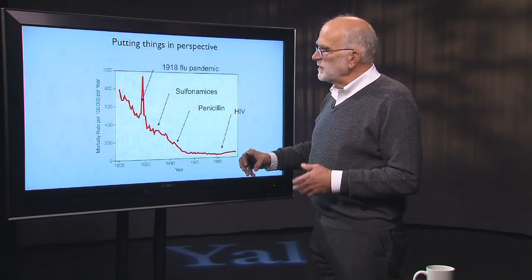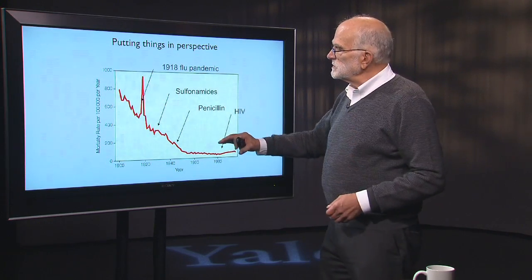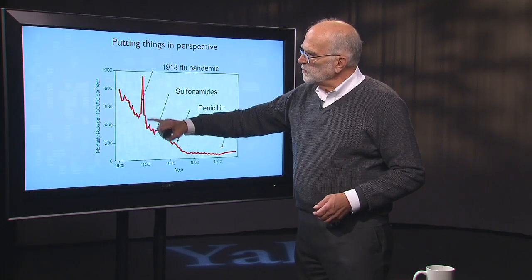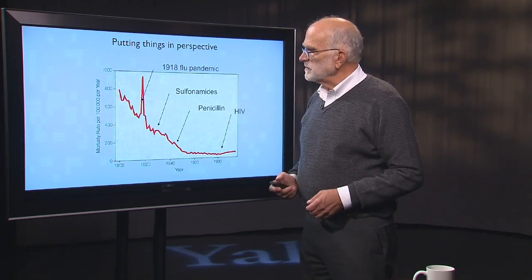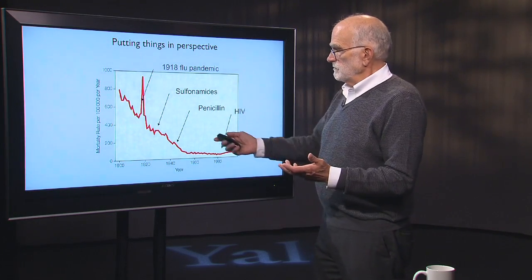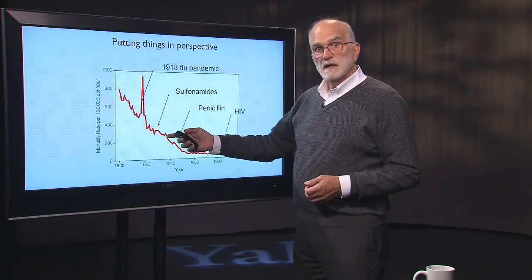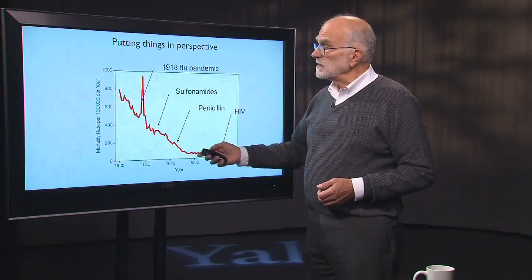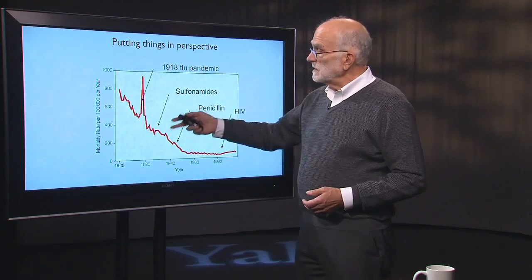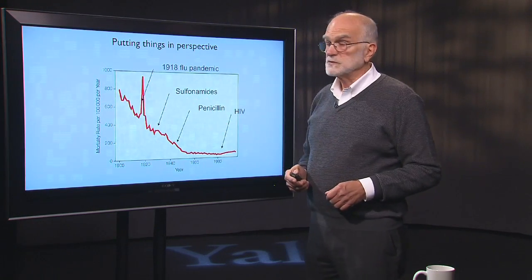And if we lose antibiotics, then we're likely to go back to about this level of mortality rate per 100,000 per year. Now, mind you, that's still a lot higher than it currently is and it's not nice, but it's not as bad as things were in the 19th century.